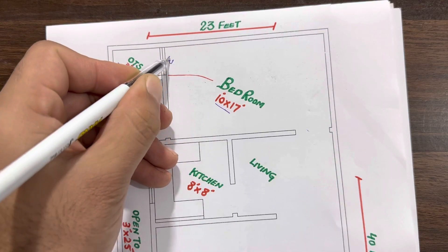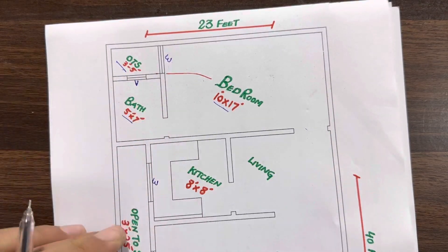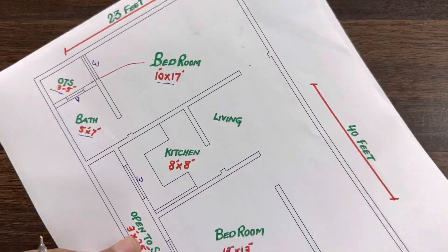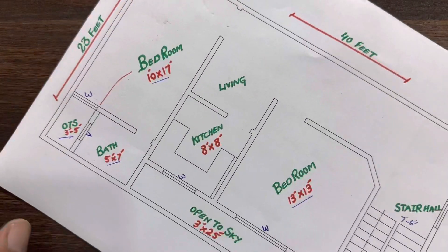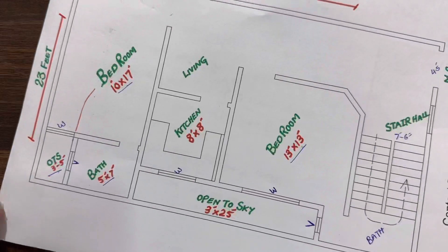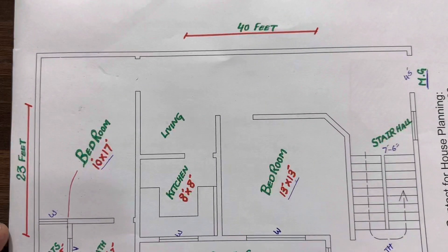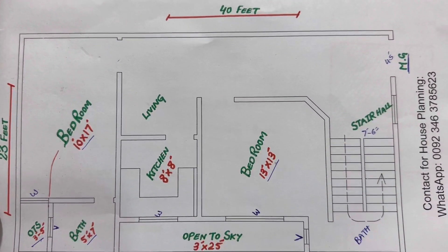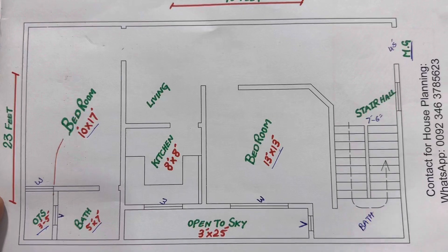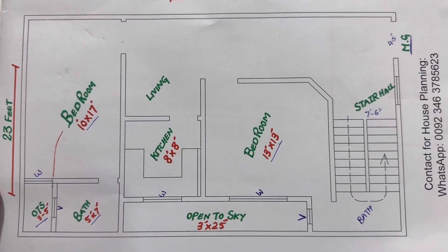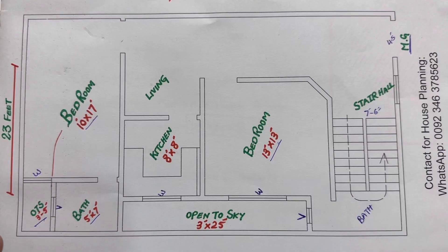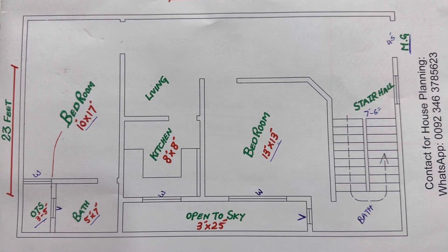There is also a window for this bedroom. So guys, this is the small house planning in the dimensions of 23 by 40 feet. Hope this short video can help you — thanks for watching, see you in the next video, goodbye.